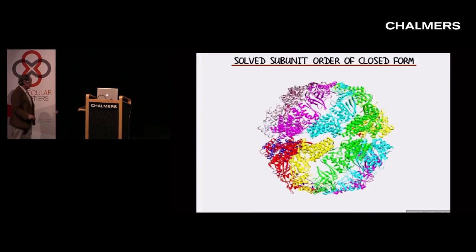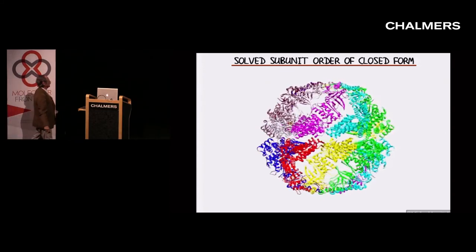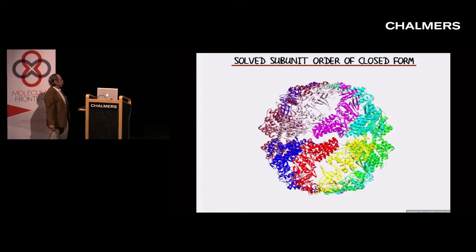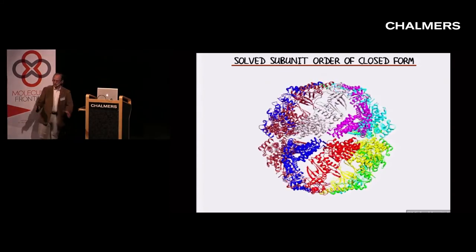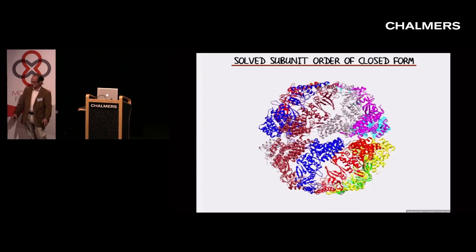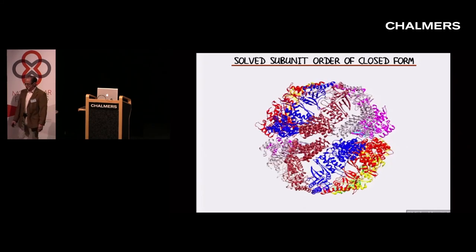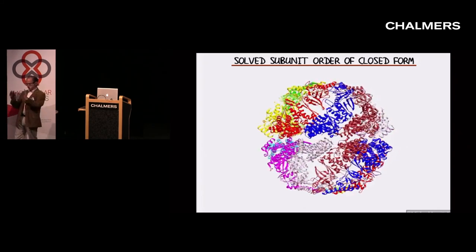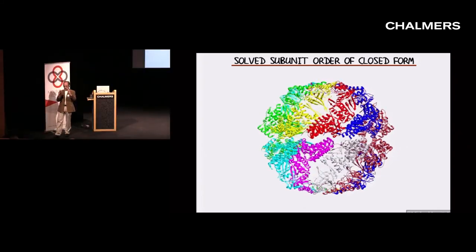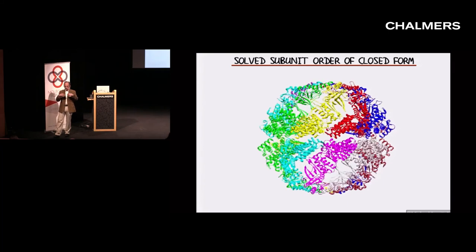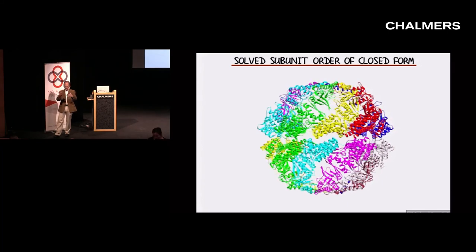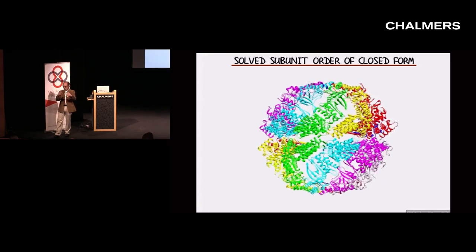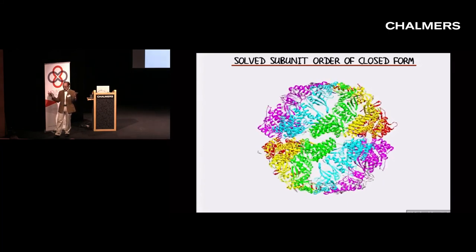Now what about function? This is a very beautiful structure. Why does it have this sort of broken symmetry? If all Chaperonin needs to do is perform a cavity so an unfolded protein can crawl into it and fold without being disturbed by other proteins, why does it need this elaboration?